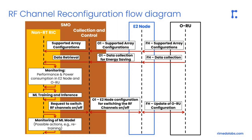In the slide we can see the information flow diagram between the non-real-time RIC, where the energy saving algorithm is deployed as an ERAP, the E2 node, and the open radio unit. First, the ERAP in the non-real-time RIC must retrieve the possible Massive MIMO configurations from the open radio unit. This is done in a hierarchical manner through the O1 interface between SMO and E2 node, and the open fronthaul interface between E2 node and open radio unit. Next, the data retrieval must be established between the non-real-time RIC and the open radio unit, using the same mechanism.